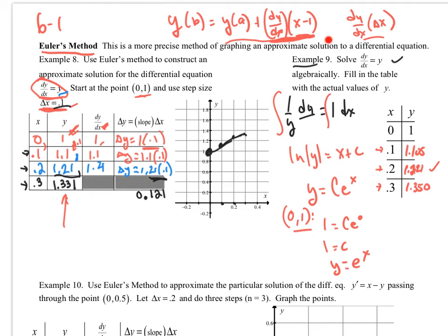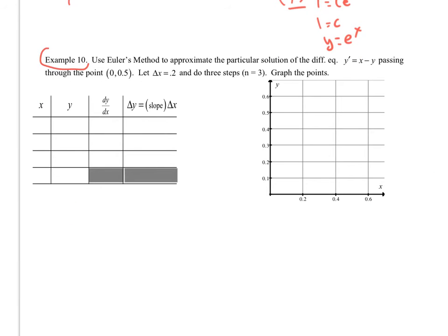I hope that makes sense. You can do it all out in this form. That's what happens sometimes. But I kind of like this little bit of shortcut method as long as you remember that you increment as you go down for the y's. Example number 10. Use Euler's method to approximate the particular solution for the differential equation. y prime is equal to x minus y passing through this point and delta x is equal to 0.2.